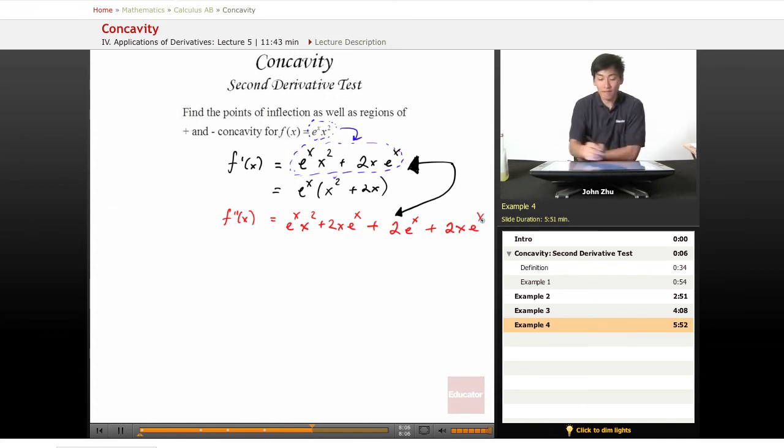So now we have e to the x times x squared plus 4x plus 2. So to set this equal to zero, we can find the points of inflection and then examine for concavity.